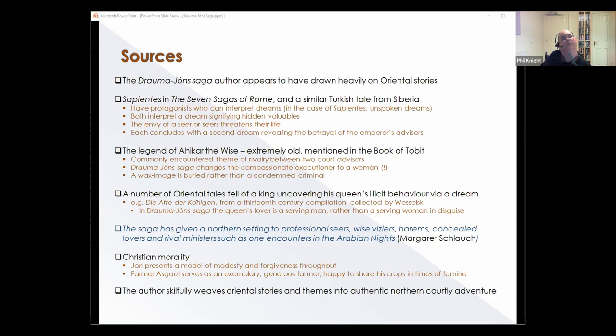A medieval Latin story from a 13th century compilation collected by Wesselski under the title The Apocryphal Königin tells how the king of Sheba hears a voice telling him his queen is sleeping with an ape. He orders all the apes to be killed, but the warnings continue. A wise maiden then uncovers the queen's lover, who is disguised as a maid. The wise maiden then goes on to marry the king and they have a daughter, who is in fact the legendary queen of Sheba who visits Solomon. In Draumr Jóns, the queen's lover is a serving man rather than a serving woman in disguise. Overall, it seems safe to conclude that much of Draumr Jóns's plot is of Eastern origin. Margaret Schlauch suggests the saga has given a northern setting to professional seers, wise viziers, harems, concealed lovers, and rival ministers, such as one encounters in the Arabian Nights.